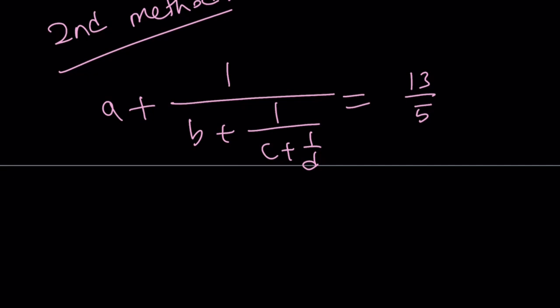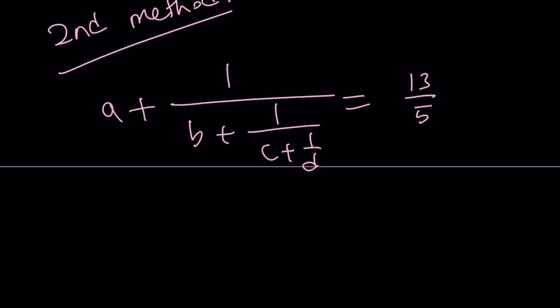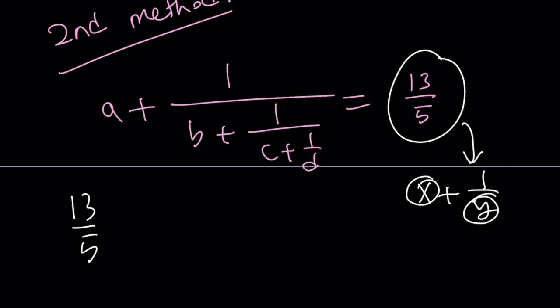To solve this problem, we're actually not going to mess with the left-hand side, because that's already very messy, and we're going to mess with the right-hand side. So let's go ahead and take 13 over 5 and kind of break it down. So I want to write it as something plus 1 over something.